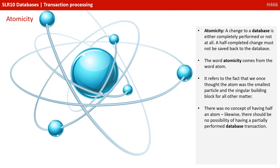So let's just have a look at them. First of all, atomicity. This means a change to a database is either completely performed or not at all. A half completed change must not be saved back to the database. The word atomicity comes from the word atom — it refers to the fact that we once thought the atom was the smallest particle and the singular building block for all other matter. There was no concept of having half an atom. Likewise, there should be no possibility of having a partially performed database transaction.